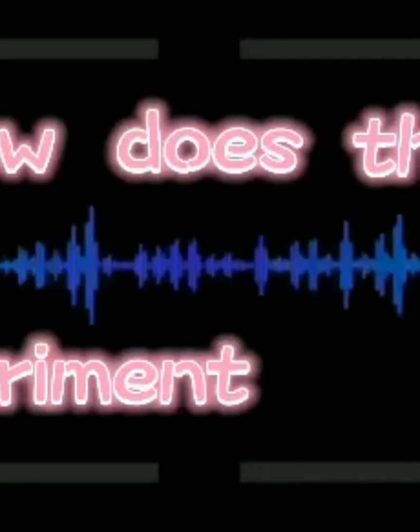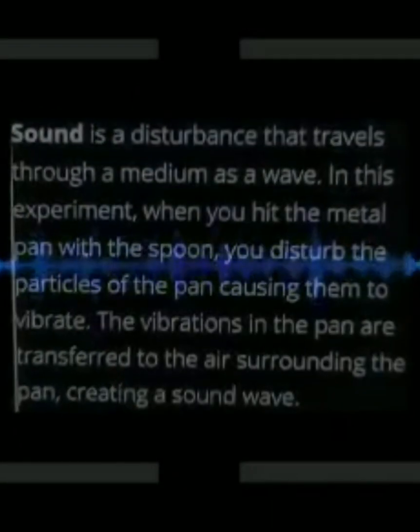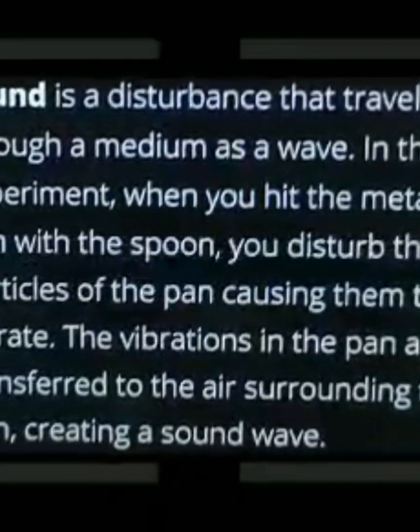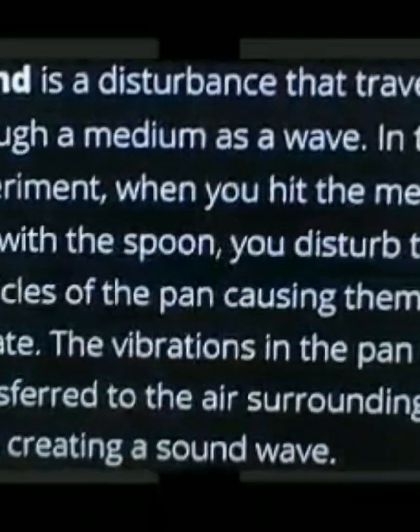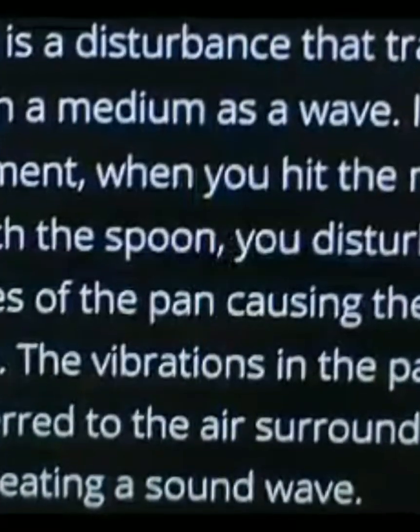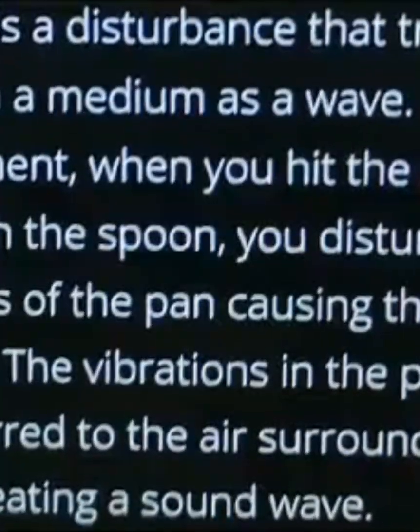How does the experiment work? Sound is a disturbance that travels through a medium as a wave. When you hit the metal pan with the spoon, you disturb the particles of the pan, causing them to vibrate. The vibrations in the pan are transferred to the air surrounding the pan, creating a sound wave. When these sound waves reach the plastic wrap, it disturbs the particles of the plastic wrap causing them to vibrate, and this vibration causes the rice to move. Sound waves traveling through the air are also what allows us to hear the noise of the spoon hitting the pan.